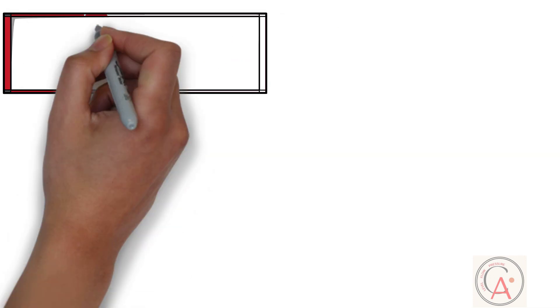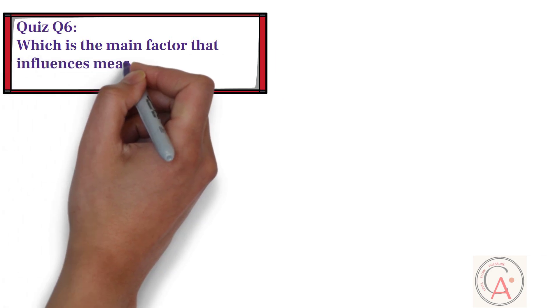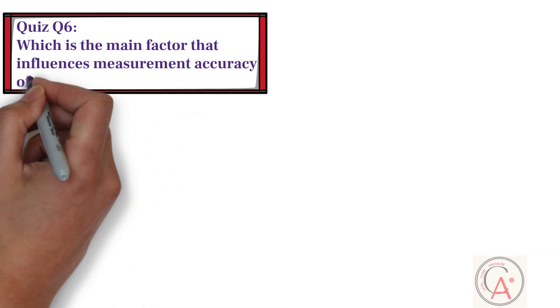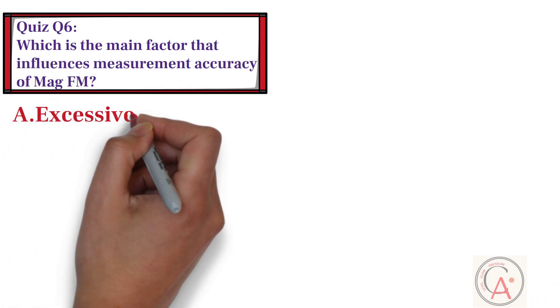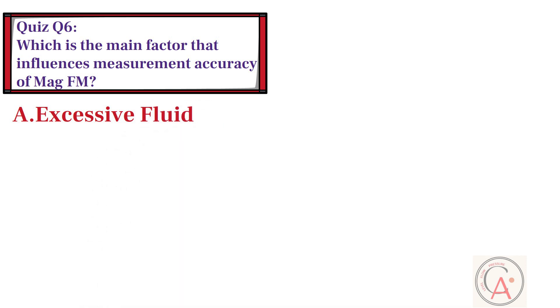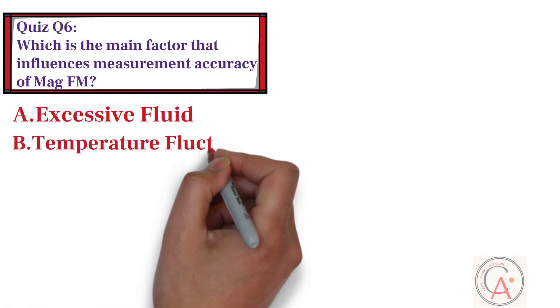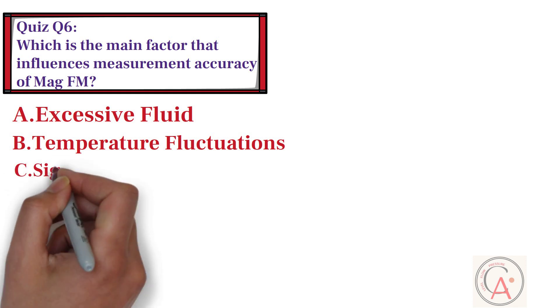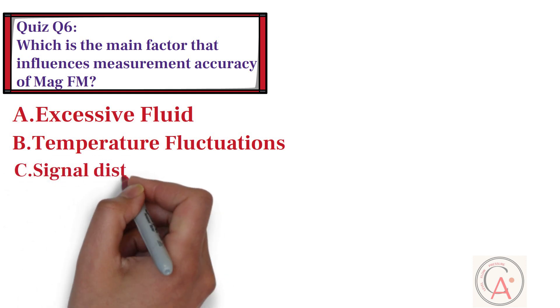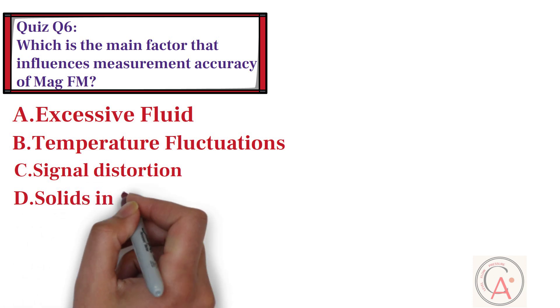The second to last question is: which is the main factor that influences measurement accuracy of magnetic flow meters? Option A: excessive fluid. Option B: temperature fluctuations. Option C: signal distortion. And option D: solids in the fluid.